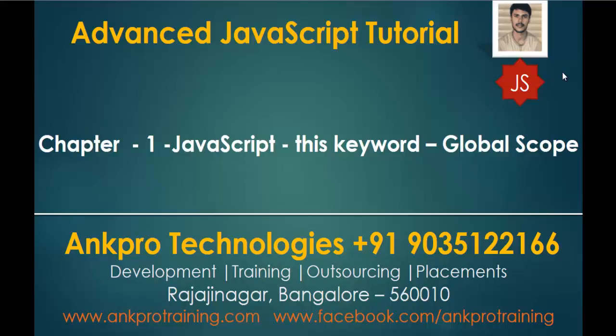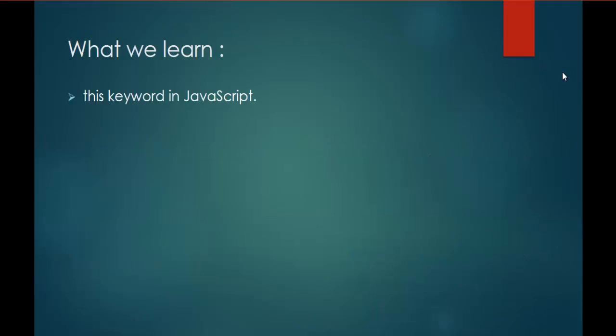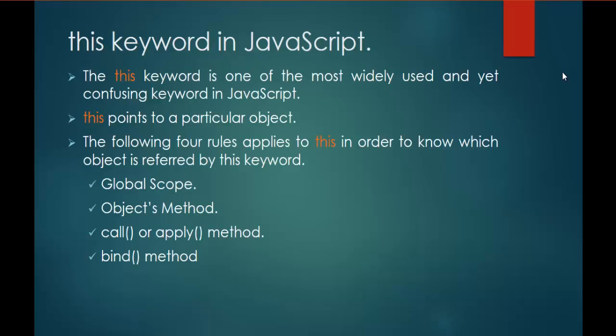In this session, we are going to learn about the 'this' keyword in JavaScript. The 'this' keyword is one of the most widely used and yet confusing keywords in JavaScript. What does 'this' keyword point to? It points to a particular object. In the coming sessions, we will learn more, but first let us understand the four rules that apply to 'this' in order to know which object is referred to.